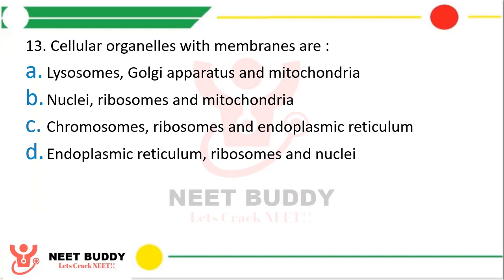Question thirteen. Cellular organelles with membranes are: option A lysosomes, Golgi apparatus and mitochondria; option B nuclei, ribosomes and mitochondria; option C chromosomes, ribosomes and endoplasmic reticulum; or option D endoplasmic reticulum, ribosomes and nuclei. The correct answer is option A — lysosomes, Golgi apparatus and mitochondria.